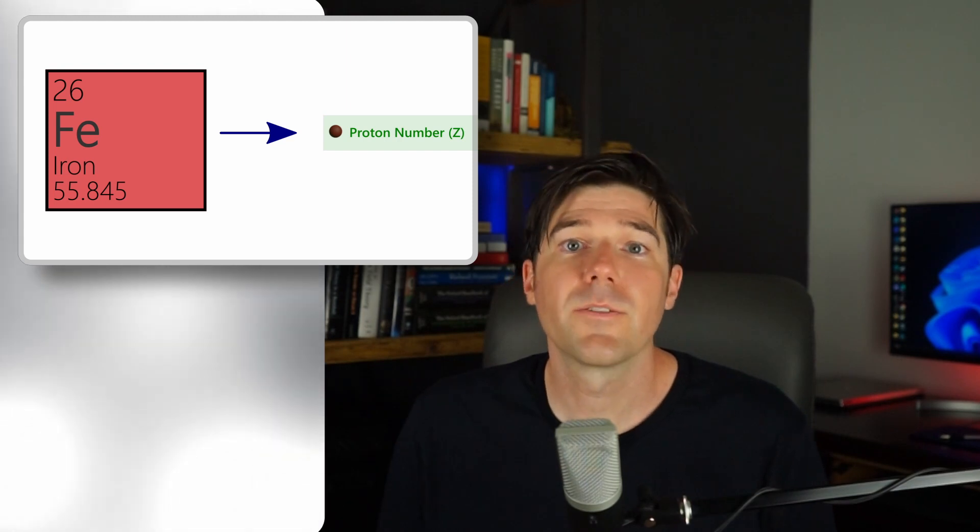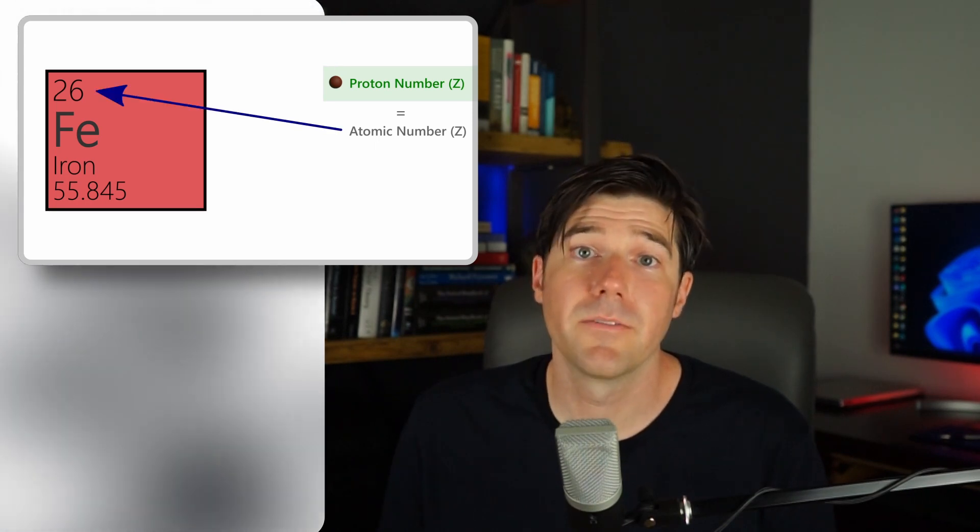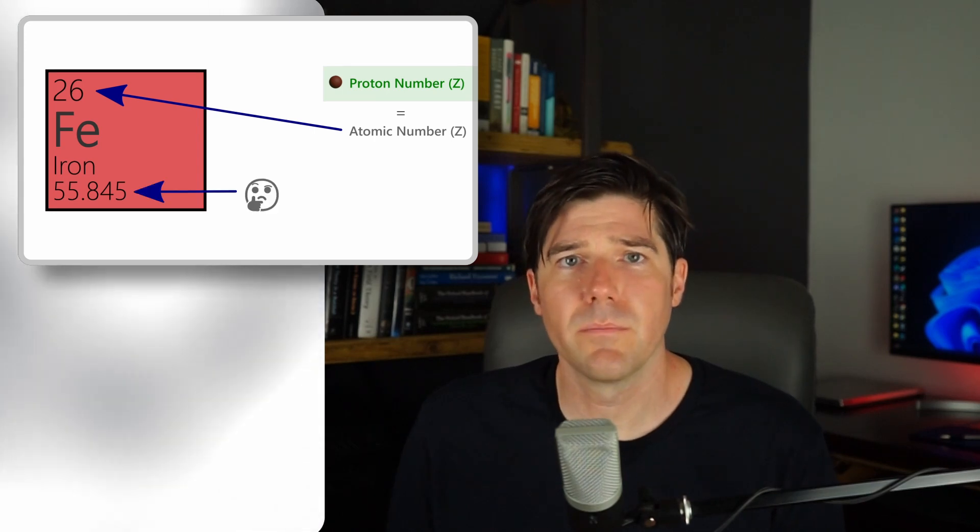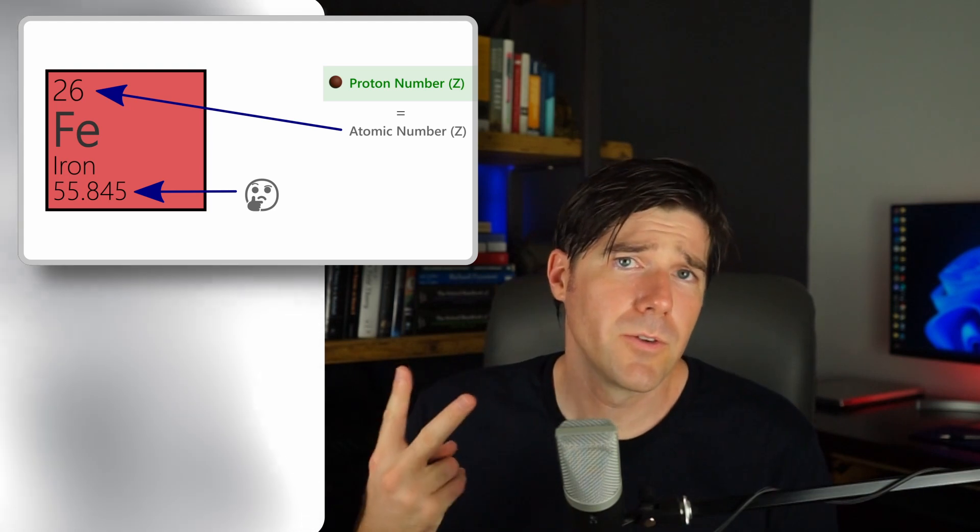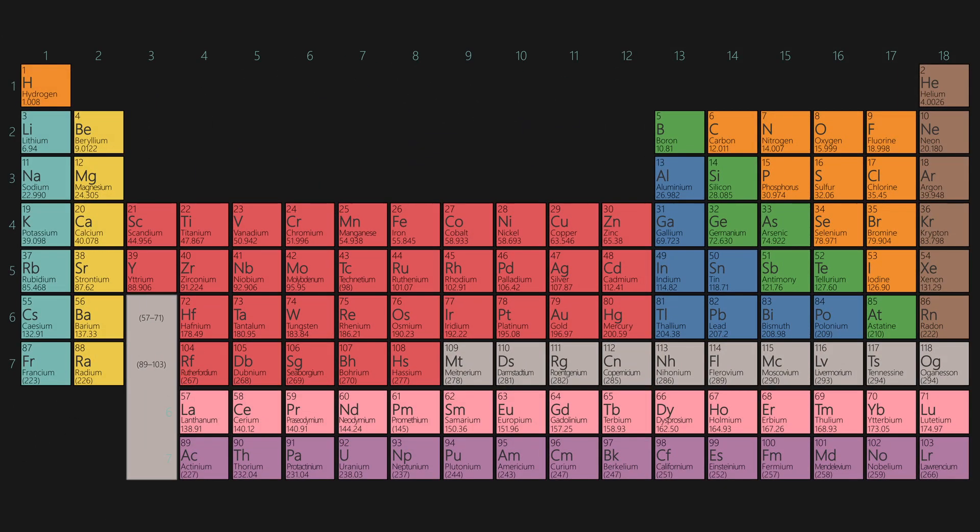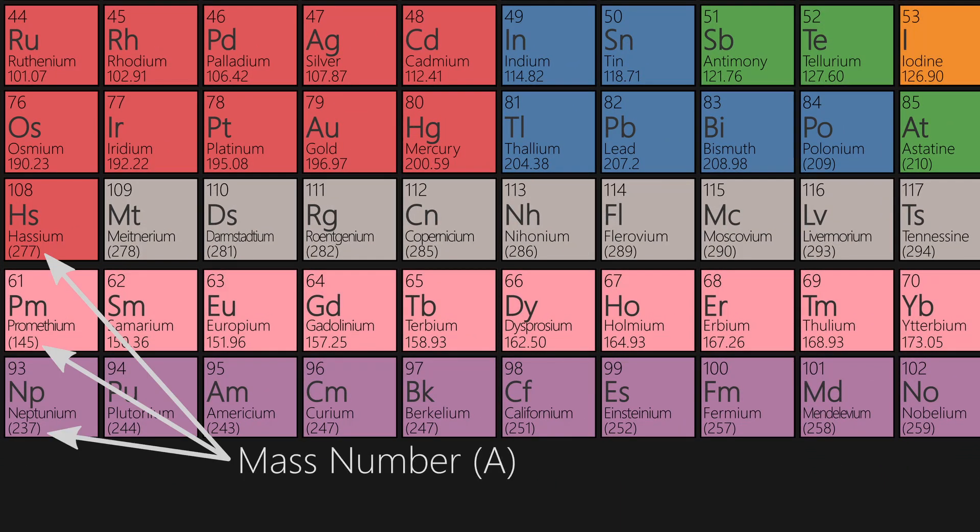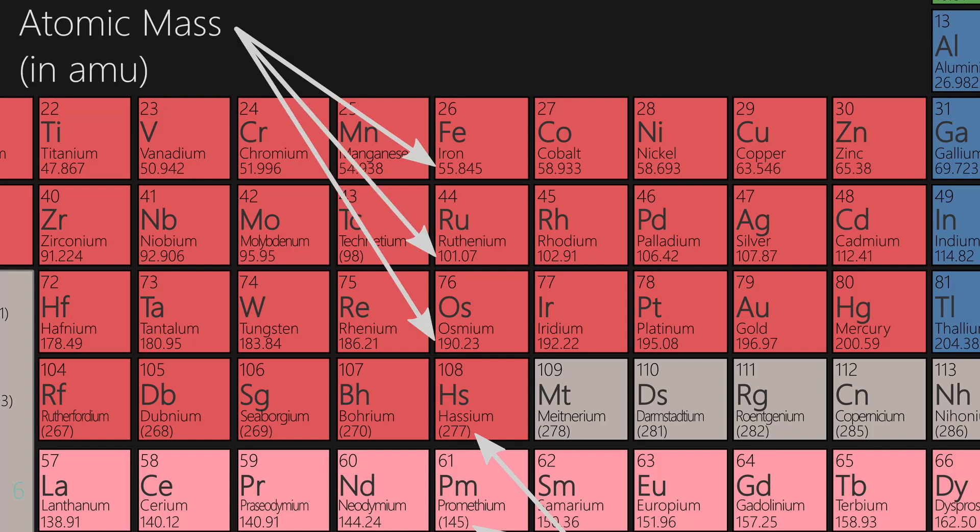This number is referred to as the atomic number. And on a periodic table, this number is often displayed above each element's symbolic name. You may also notice a second number listed below an element symbol. Depending on the element listing, this can be one of two quantities. If the number is a nice, tidy integer, then this number is referred to as the mass number of the element, which is an element's total number of neutrons and protons summed together. Most elements, however, list the actual mass of the atom in units of AMU, and this is referred to as the atomic mass.